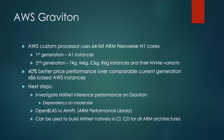AWS Graviton processors are custom built by AWS using 64-bit ARM Neoverse N1 cores to deliver the best price performance for cloud workloads running on EC2. The first generation AWS Graviton processors power Amazon EC2 A1 instances. The second generation processors power Amazon EC2 T4G, M6G, C6G, and R6G instances, and their variants with local NVMe-based SSD storage. They can provide up to 40% better price performance over comparable current generation x86-based instances for a wide variety of workloads.